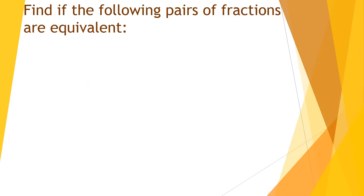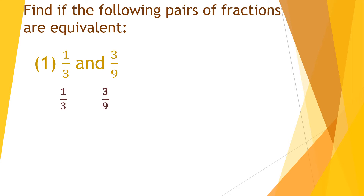Find if the following pairs of fractions are equivalent. Question number 1: 1 upon 3 and 3 upon 9. Let us compare the equivalent fractions by the cross multiplication method. Cross multiplication means we multiply the numerator of one side by the denominator of the other side.